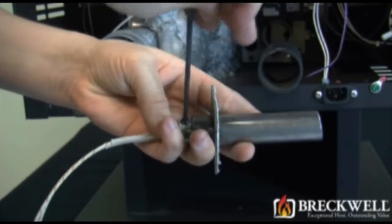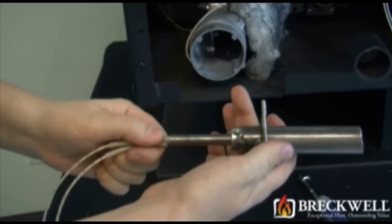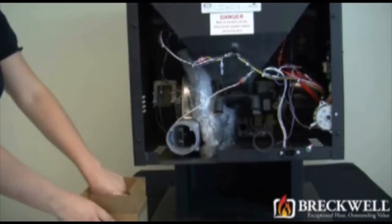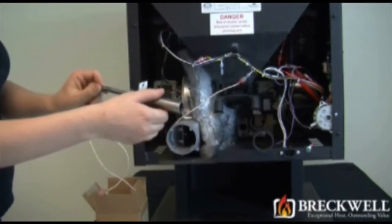Then, using your Allen wrench, loosen the set screw on the back of the igniter module. This will allow the igniter module to slide free from the housing.